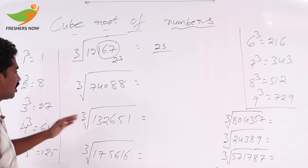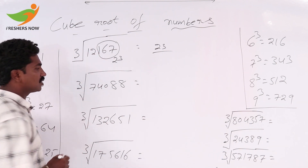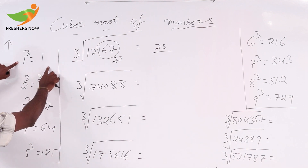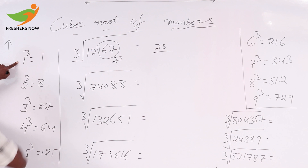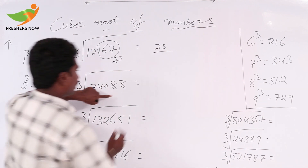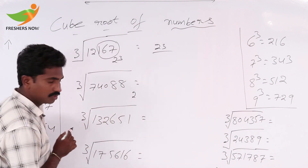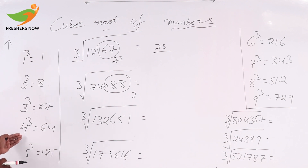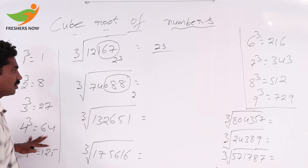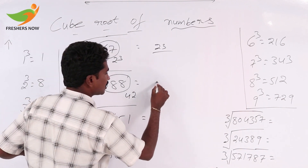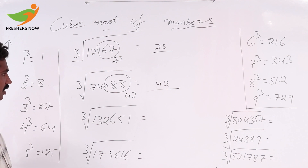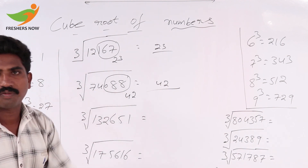If we take another number, cube root of 740. At the units place value, 8 is there. 2 cube is 8, so the units place value is 2. Keep and reduce away — 74 is there. 4 cube is 64, 5 cube is 125. 4 cube, 64, is less than 74, so we can take 4. That value is 40, so the cube root of 740 is 42.